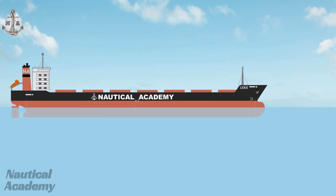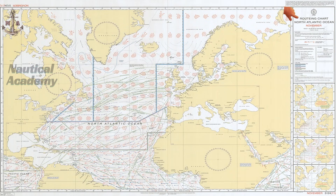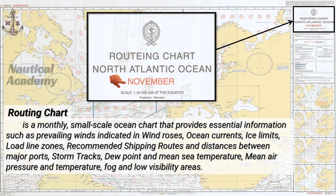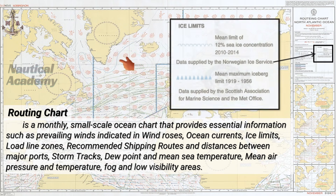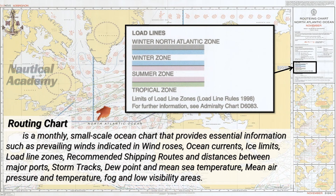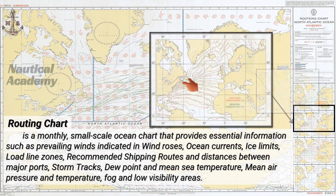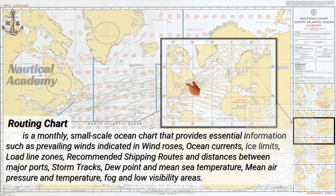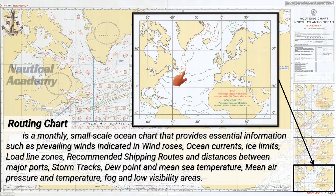One essential reference during the appraisal stage when creating a passage plan is the routing chart. This is a monthly, small-scale ocean chart that provides a wide range of information, including prevailing winds shown through wind roses, ocean currents, ice limits, load line zones, recommended shipping routes and distances between major ports, storm tracks, dew point and mean sea temperature, mean air pressure and temperature, and areas prone to fog and low visibility.